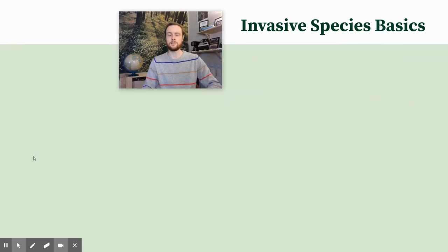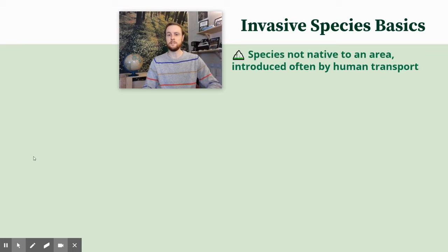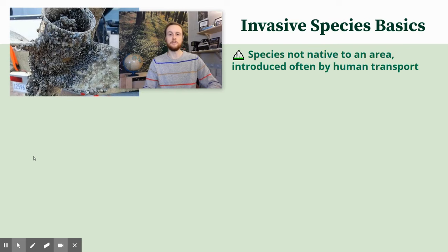We'll start off today by covering some invasive species basics. An invasive species is a non-native species that is usually introduced to an ecosystem through human activity. An example is the zebra mussel — the human activity of boating, moving boats from different lakes to different rivers, allows zebra mussels to attach to those boats and be transported into ecosystems where they weren't previously found.